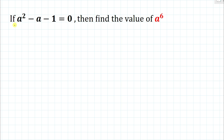We have been given: if a² - a - 1 = 0, then find the value of a to the power 6.